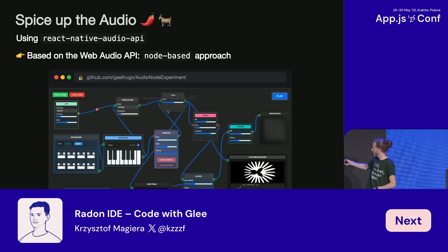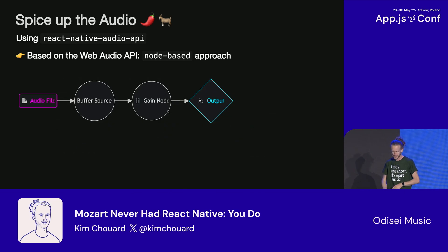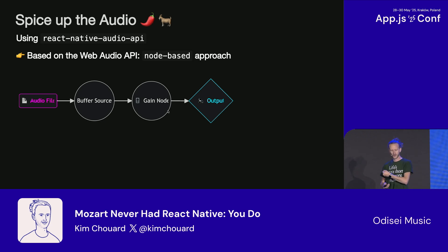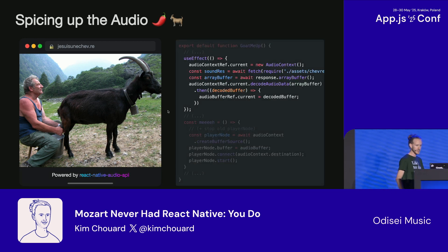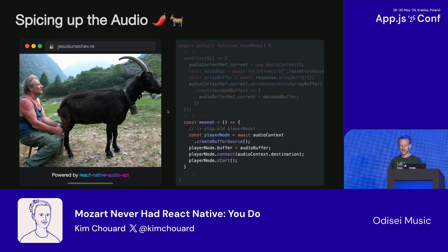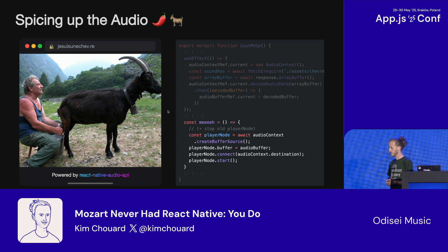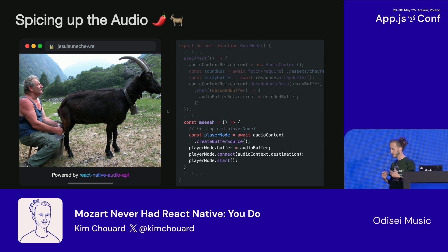Here's an example of a UI built on the Audio API. For the basic example, you take the audio file, extract the buffer, put it to a buffer source, then connect that to a gain node — like a volume node — and put that to the output. There's input, destination, and all the jazz in between. In code, you create your context, get the buffer, and when you click you instantiate the player node and connect it to the output. One quirk: you need to instantiate the node every time you play a sound; when it's finished, it dies.